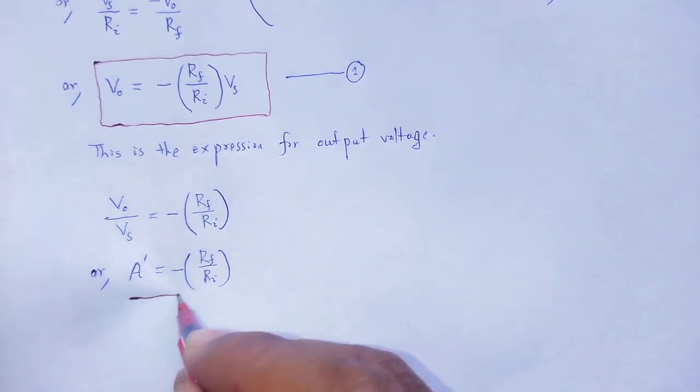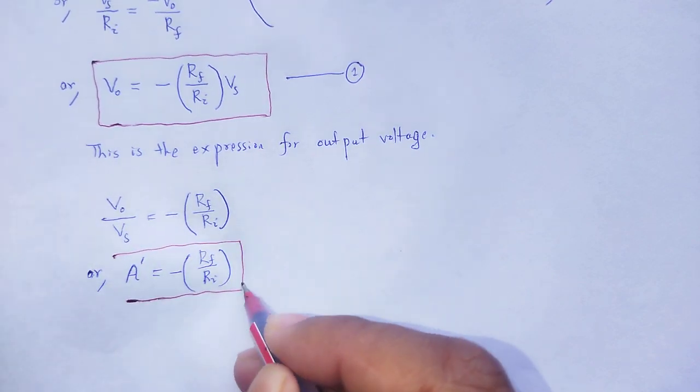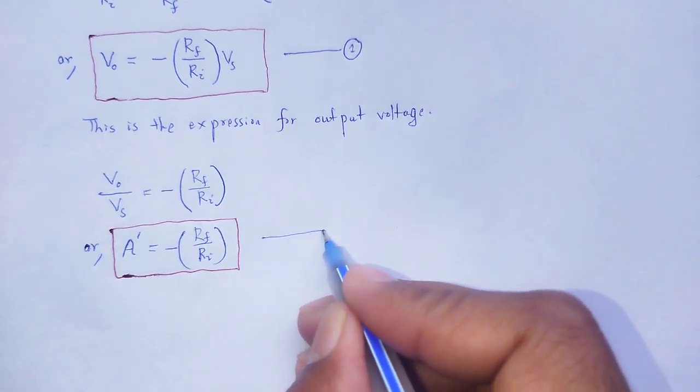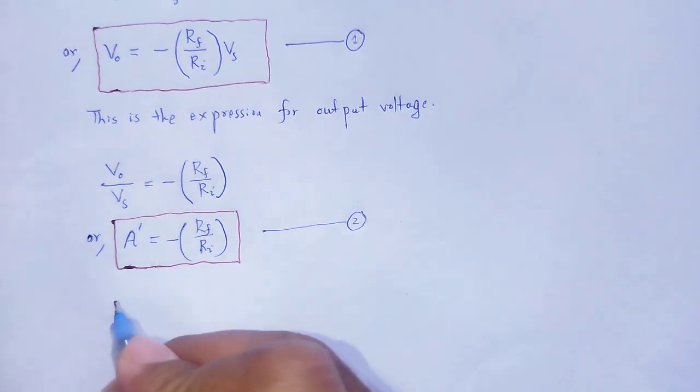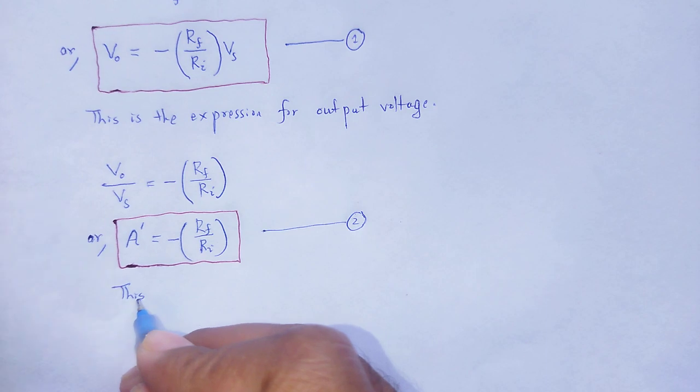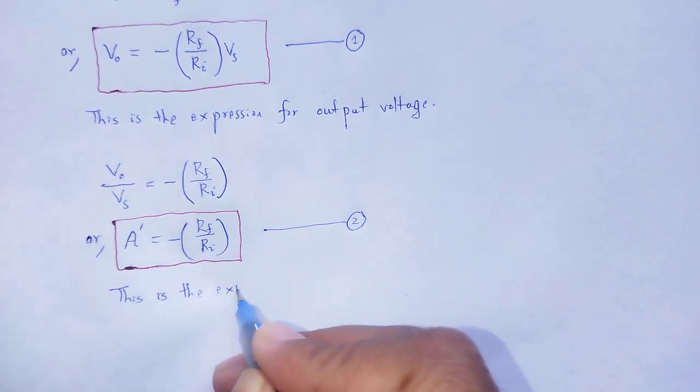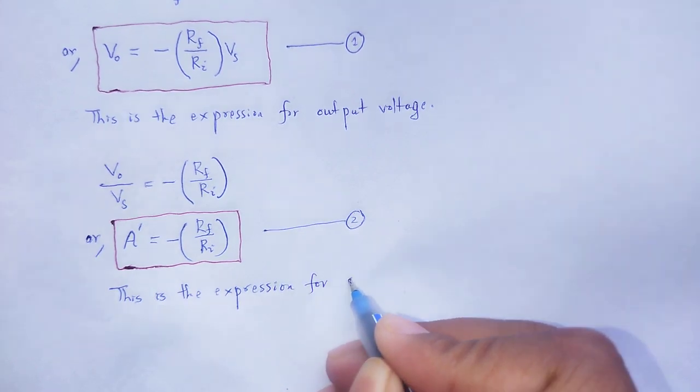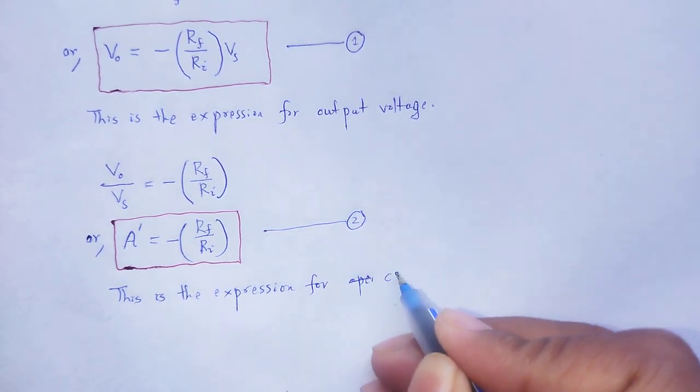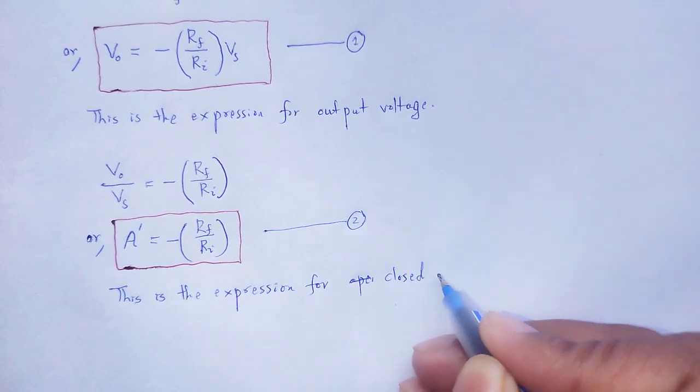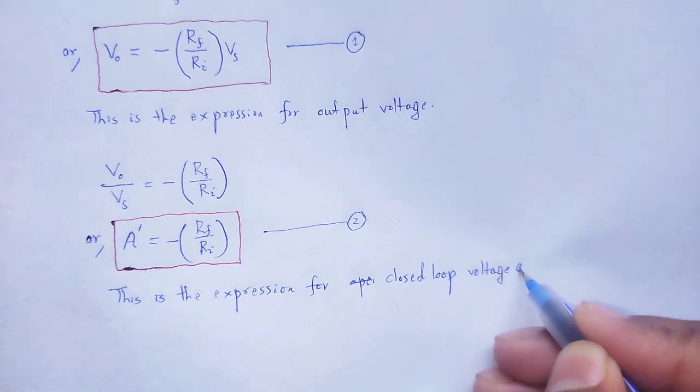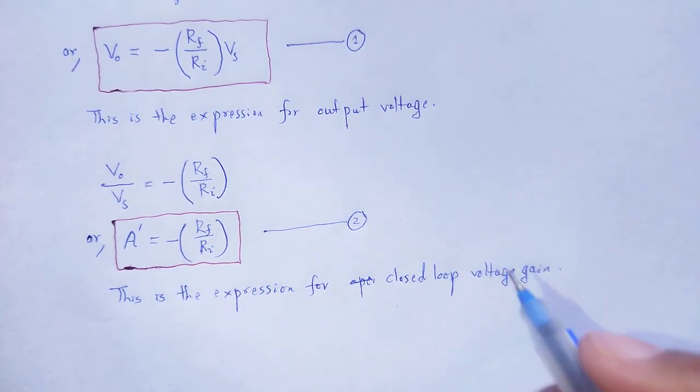This is the expression for closed loop voltage gain in case of inverting amplifier.